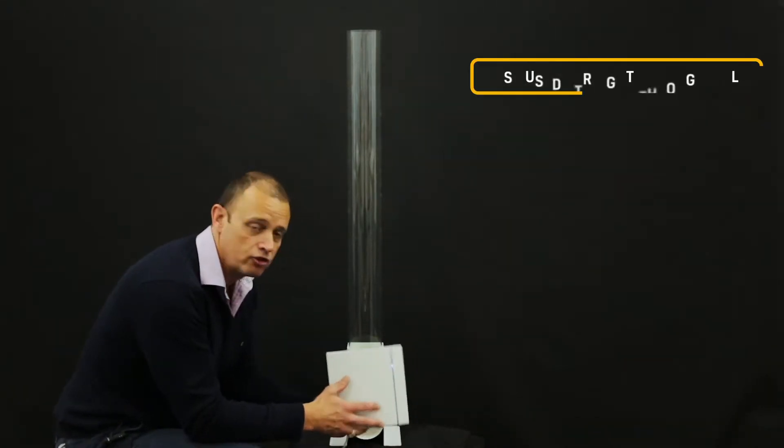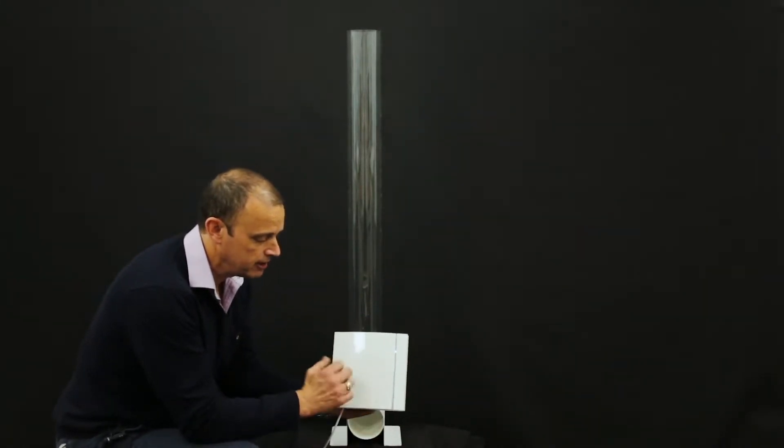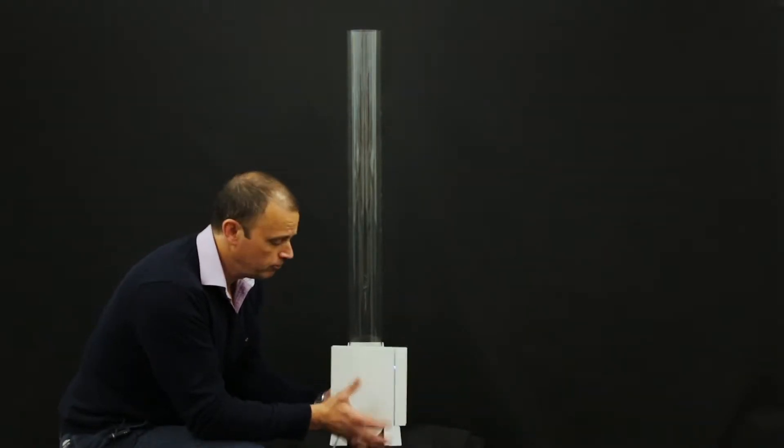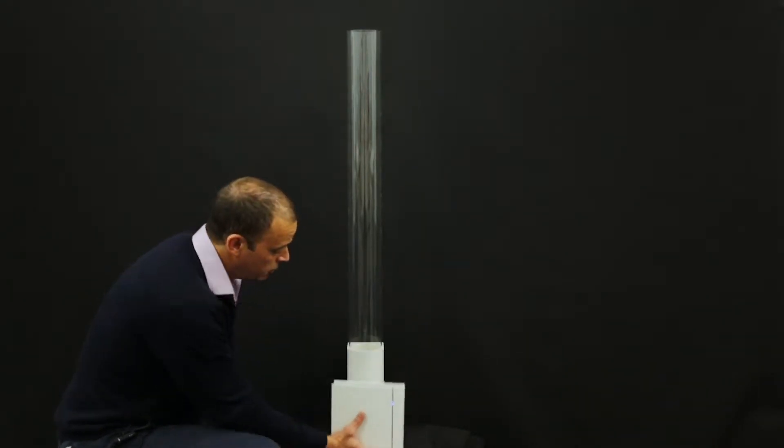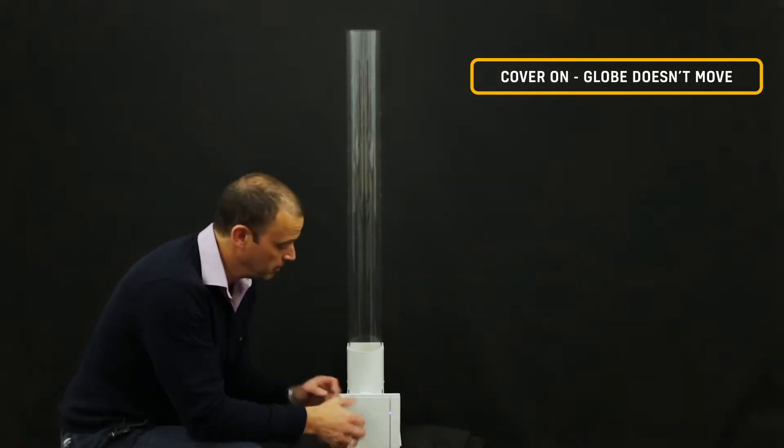So this fan is ideally only suited to go straight through a wall. If you start ceiling-mounting it, although it could be ceiling-mounted—it is IPX-rated, there's no issues—you're going to reduce the performance of the fan.